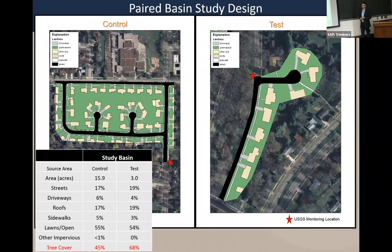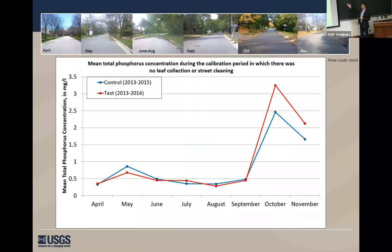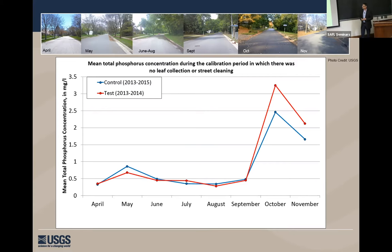Here we have a classic paired basin study design, where we have a control and we have a test. You can see the distribution of source areas for each — they don't have to be identical in a paired basin, that's the beauty of it. You develop a relationship between these two catchments during a calibration period, follow that up with some sort of treatment — in this case leaf collection — and then measure the response of that relationship between the two basins. This is what the calibration period looks like. This is our do-nothing scenario — all the leaves remained on the streets and in the leaf piles in both our control and test catchment.